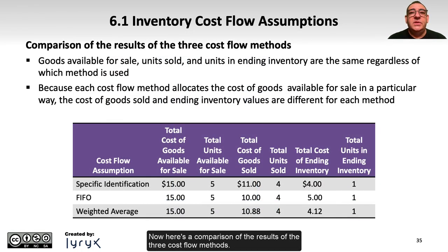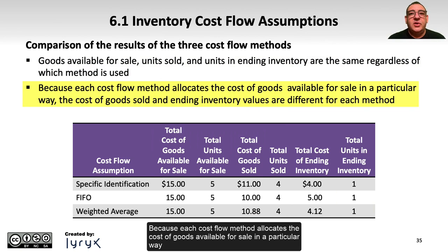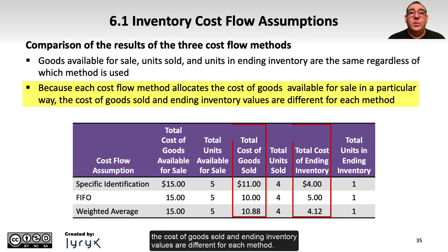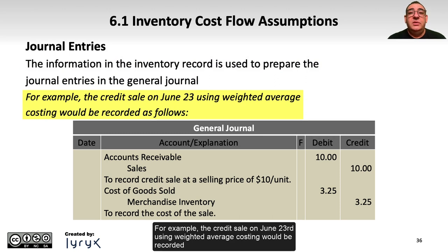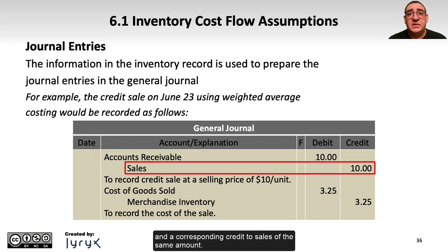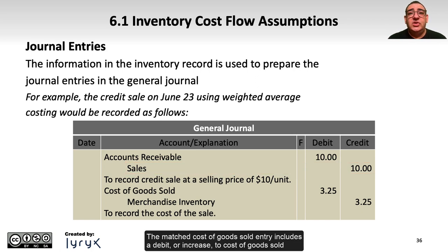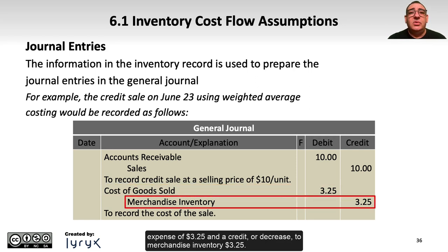Here is a comparison of the results of the three cost flow methods. Cost of goods available for sale, units sold, and units in ending inventory are the same regardless of which method is used. Because each cost flow method allocates the cost of goods available for sale in a particular way, the cost of goods sold and ending inventory values are different for each method. The information in the inventory record is used to prepare the journal entries. For example, the credit sale on June 23rd using weighted average costing would be recorded with a debit to accounts receivable for $10 and a credit to sales for the same amount. The matched cost of goods sold entry includes a debit to cost of goods sold expense of $3.25 and a credit to merchandise inventory of $3.25.